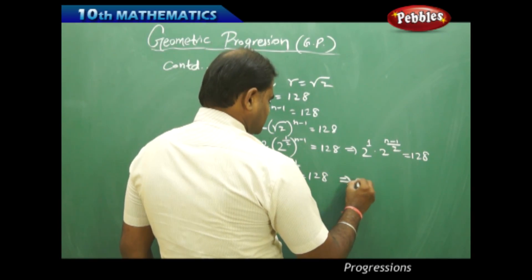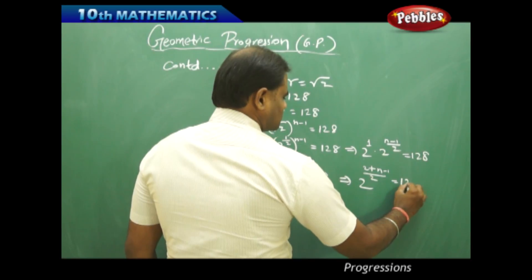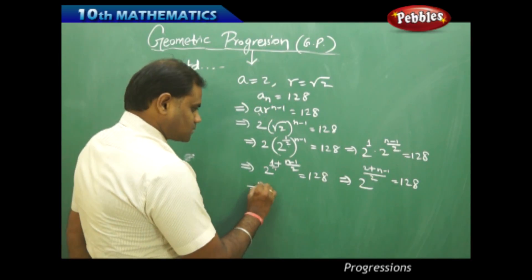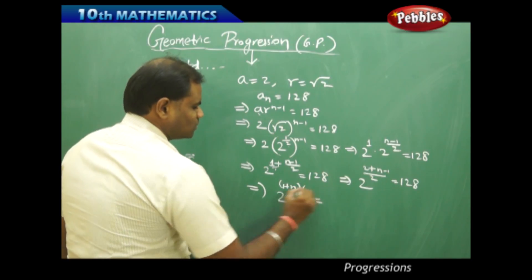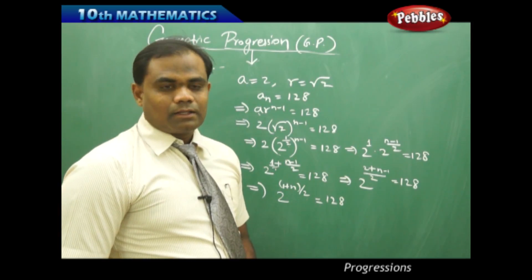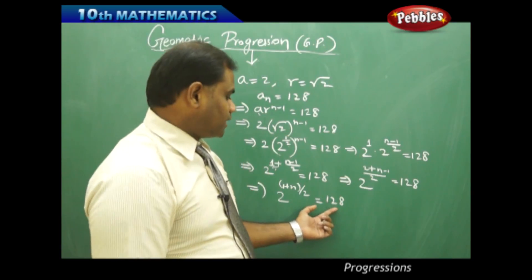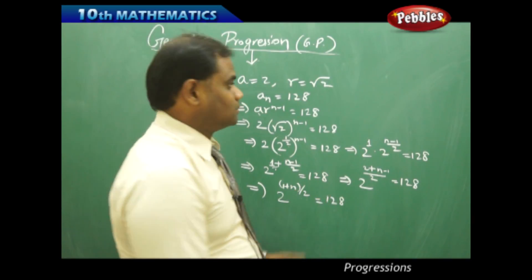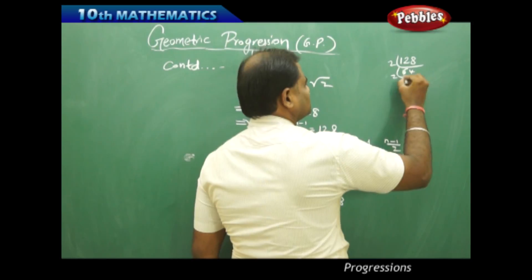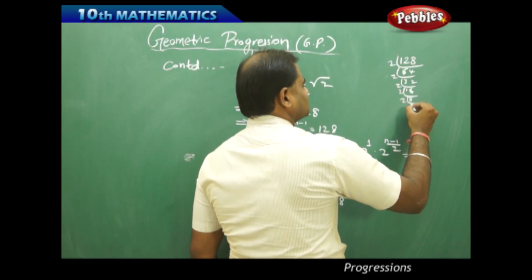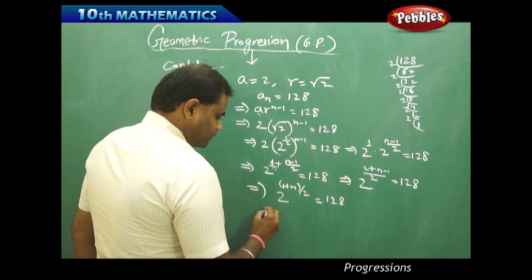This on further simplification gives me — taking LCM as 2 — 2^((2 + n − 1)/2) equals 128, which simplifies to 2^((n+1)/2) equals 128. Now how do I simplify 128? Let me try to express 128 as a power of 2. Using prime factors: 128 = 2 × 2 × 2 × 2 × 2 × 2 × 2, that is 2^7.